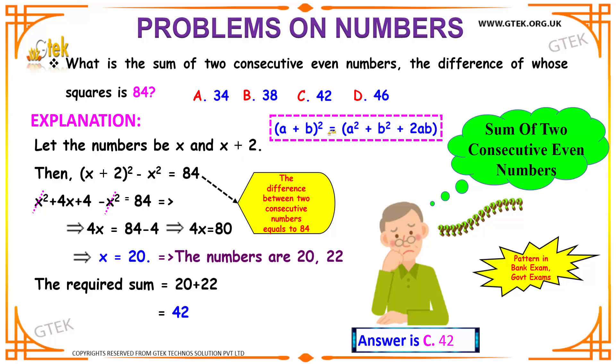It is given that the difference of the squares is 84. So the square of the number will be x square and x plus 2 the whole square. The difference is x plus 2 the whole square minus x square is equal to 84.